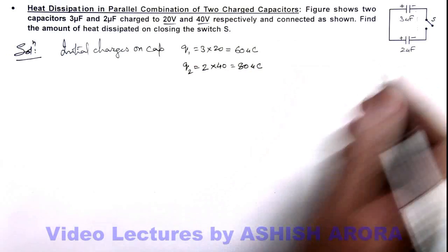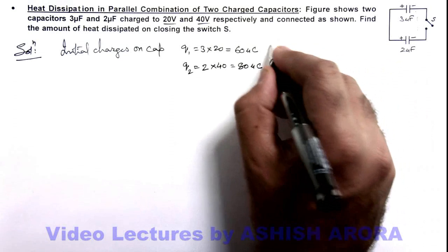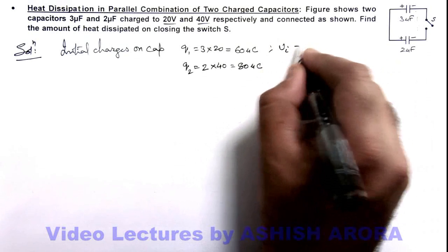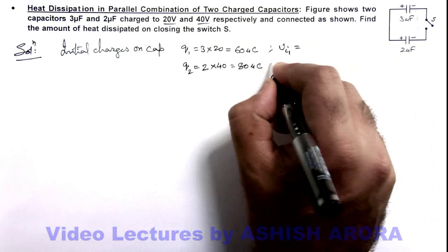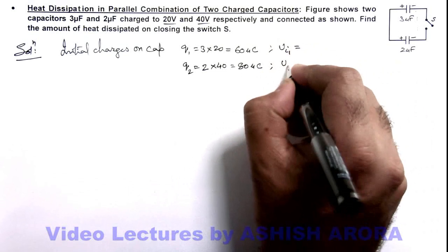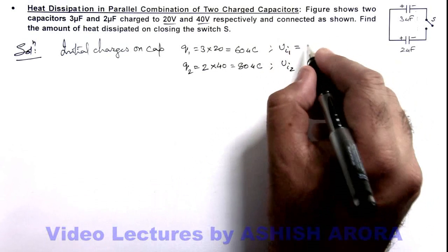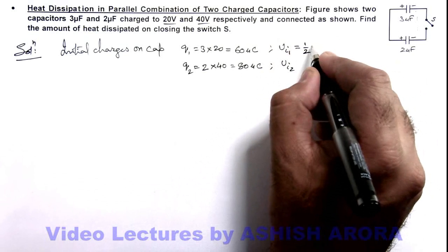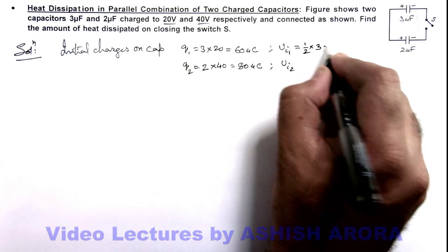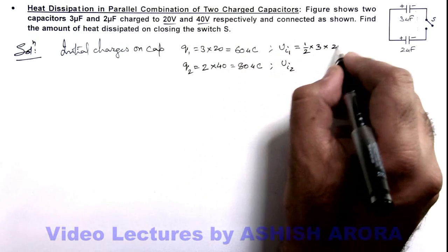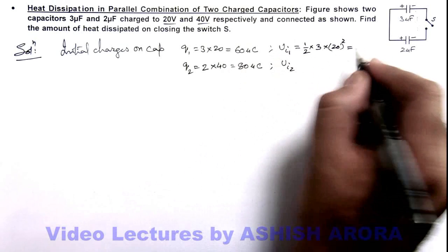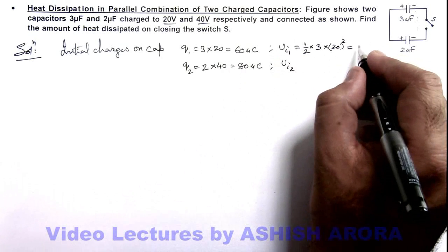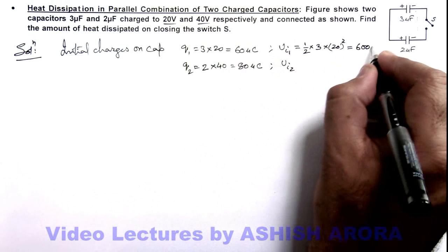Simultaneously, we calculate the initial energy stored in these capacitors. Initial energy in the first capacitor can be taken as ½CV². So it is ½ × 3 × 20², and the calculated value is 600 microjoules.